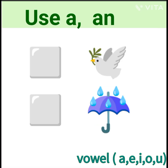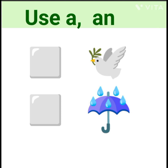Bird. The first letter of bird is B. B is consonant and single object. So we use A.